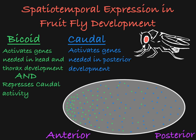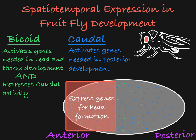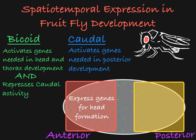Because the Bicoid protein is concentrated at the anterior end, those cells are going to be the ones expressing the genes necessary for head formation, while the posterior cells will not be expressing those genes.